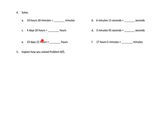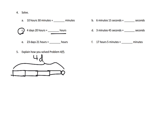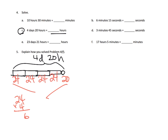So here we just have a bunch of practice of conversions. Let's take a look at question C. We've got 4 days and 20 hours, and we want to convert it into hours. You could say here's a day, here's a day, here's a day, here's a day, plus the 20 hours. We know that each day is equal to 24 hours, so that's 24 hours for each of the 4 days, plus the extra 20 hours. So all we have to do is add those up: 24 times 4 gives us 96 hours, plus the extra 20, gives us 116 hours.